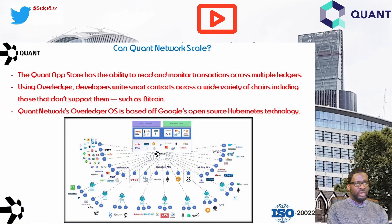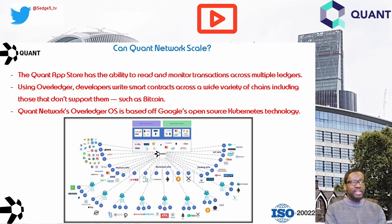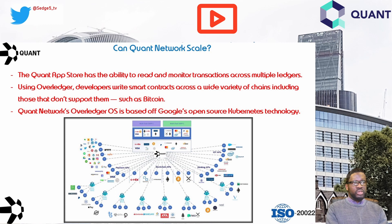As far as scaling is concerned, the Quant App Store has the ability to read and monitor transactions across multiple ledgers. Using Overledger, developers write smart contracts across a variety of chains including those that don't support them, such as Bitcoin. Quant Network's Overledger operating system is based on Google's open-source Kubernetes technology, which makes it possible for an app to support thousands of users with no struggle by automatically fixing errors using a network of nodes.